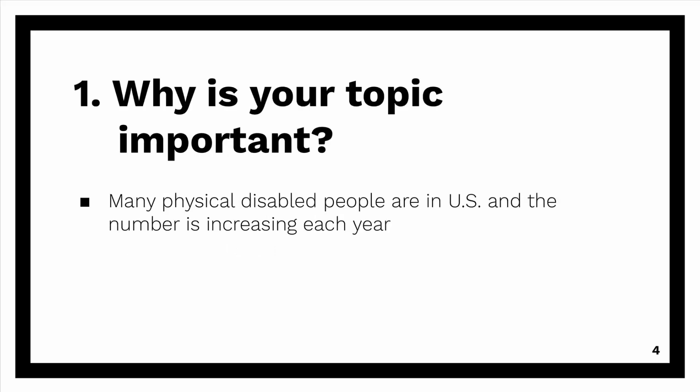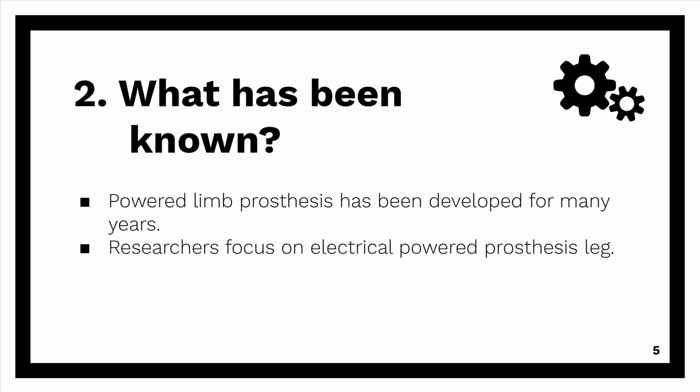Here is the sample answer. Number one, why is my topic important? I wrote down: many physically disabled people are in the US and the number is increasing each year. The second question is, what has been known? I wrote down: powered limb prosthesis has been developed for many years.